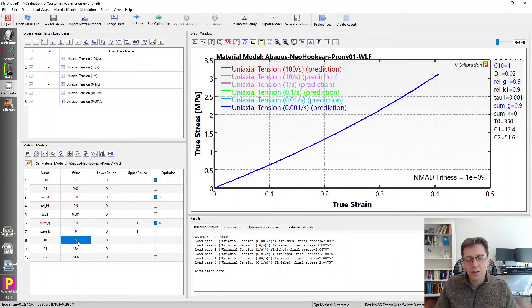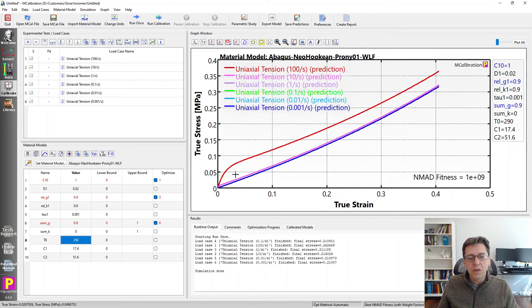If I change this T0 value in my WLF equation to 290 perhaps, and I run it again, we'll see that now we're starting to see strain rate dependence as one would expect.